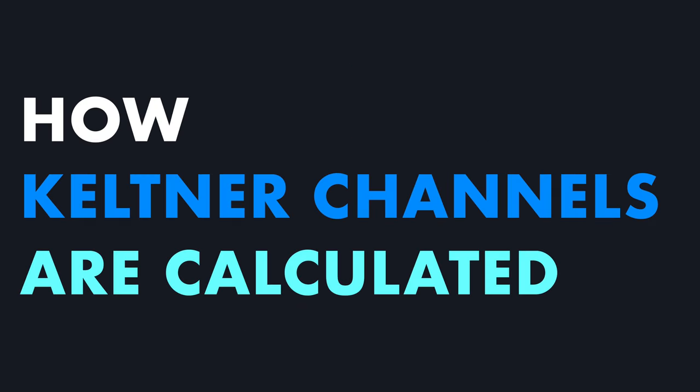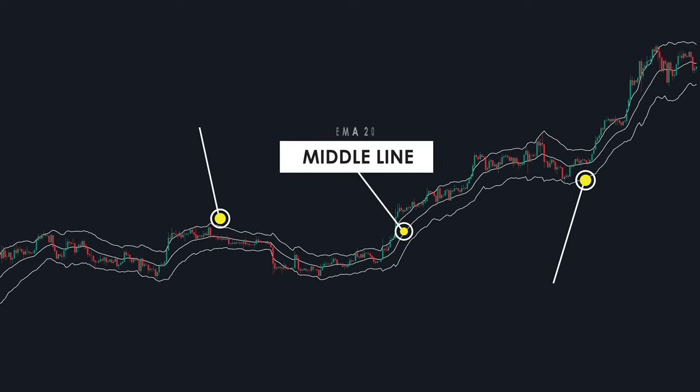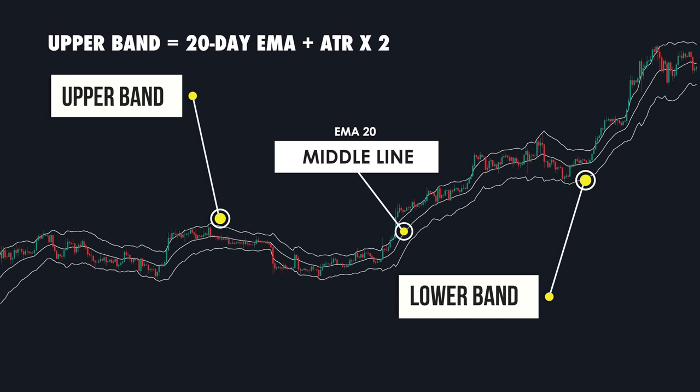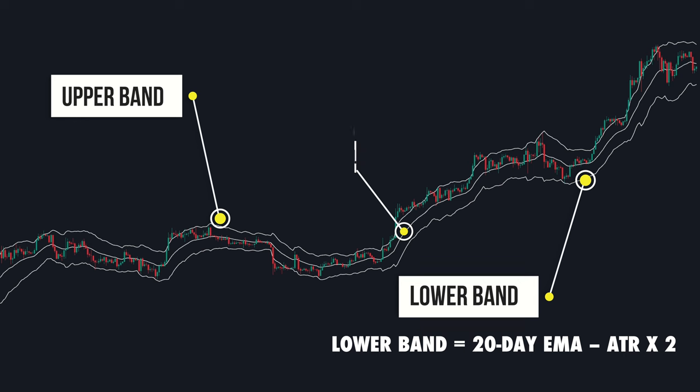Let's break down how Keltner Channels are calculated. They consist of three key components: a middle line and two outer bands. The middle line is typically an exponential moving average (EMA 20), and the two outer bands are derived from the Average True Range (ATR). The upper line is the EMA plus twice the ATR, and the lower line is the EMA minus twice the ATR.